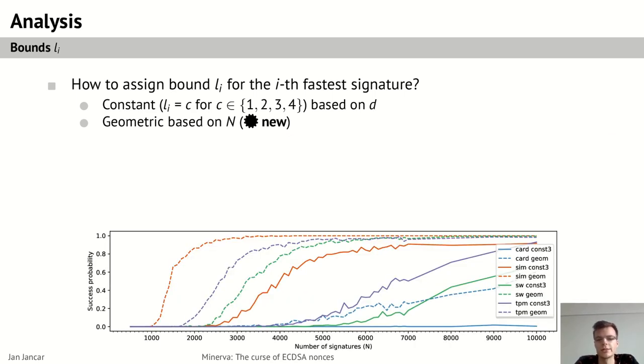But with the geometric bounds it improved the success rate quite a lot and also for the other datasets. Now as we want to analyze the success rate with regards to the number of signatures N, we average the success rate over the dimension range and give the result here. So this shows a significant improvement in success rate for geometric bounds for basically all of the datasets, and all further experiments will thus use these geometric bounds.